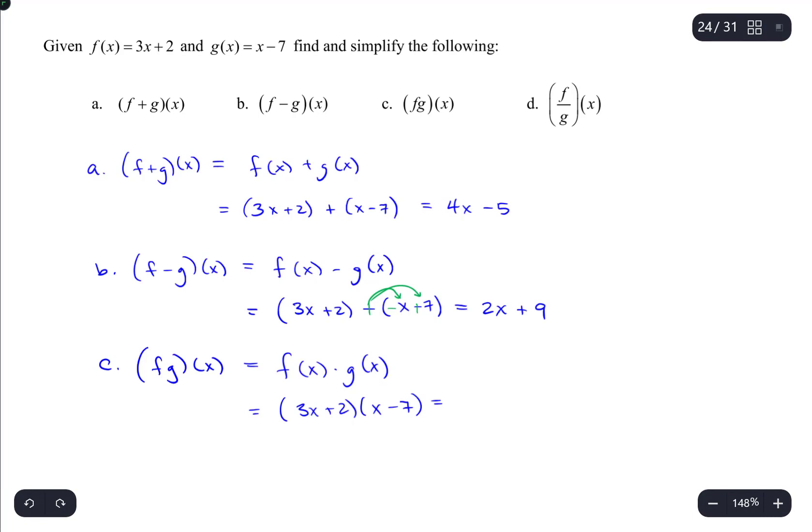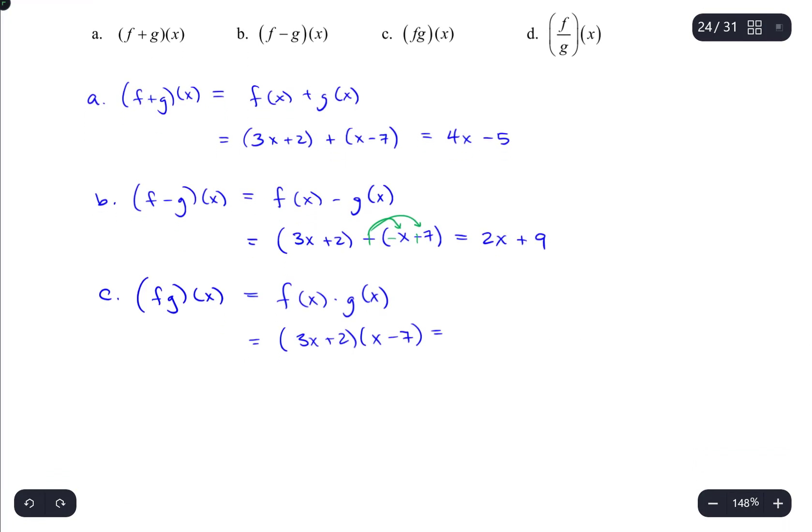So 3x times x is 3x². This would be -21x + 2x and -14. And simplifying by combining like terms, we finally get 3x² - 19x - 14. And that's the product of those two functions.